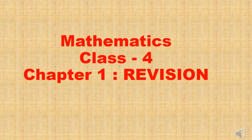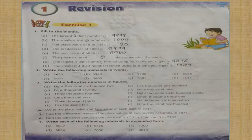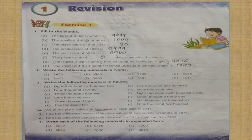Hello children, today we are going to start the first chapter of Class 4 Maths, and it is a revision exercise. Here we start — this is the first page of Exercise 1, and questions one to seven are given. I'm going to explain a few of the questions and the rest you have to do by yourself. Let's start with question number four: write the place value and face value of each digit in 8347.